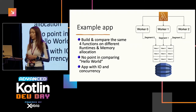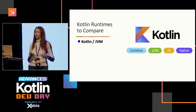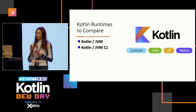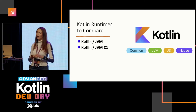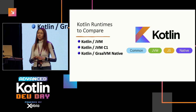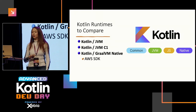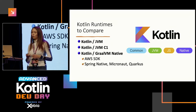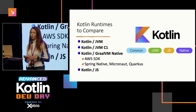Which Kotlin runtimes are we going to try? Obviously Kotlin on JVM — easy to create. Then we're going to tune Kotlin JVM with the C1 compiler optimization for cold start. Then we're going native with GraalVM. We chose GraalVM over LLVM-based because we have many libraries we want to use, and the AWS SDK latest versions support it, along with frameworks like Spring Native, Micronaut, and Quarkus. Finally, we're going to do Kotlin on JS.